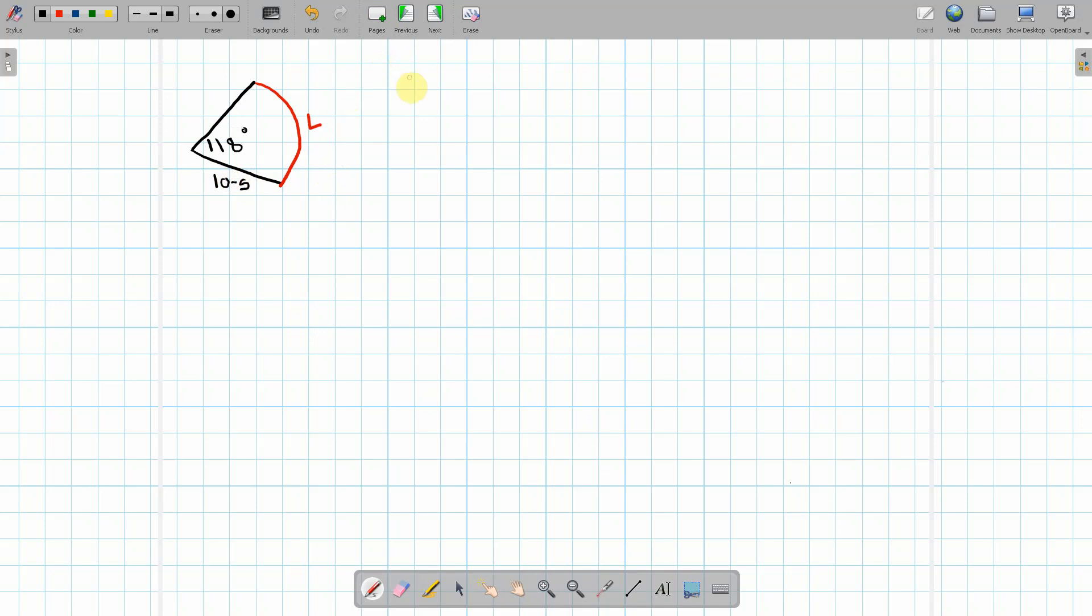Now we aren't given a formula and this is one that you will have to remember. So the arc length is given by the angle divided by 360 degrees. Now sometimes people use the Greek letter theta to denote the angle but in this case we'll just write angle, times by pi times the diameter.